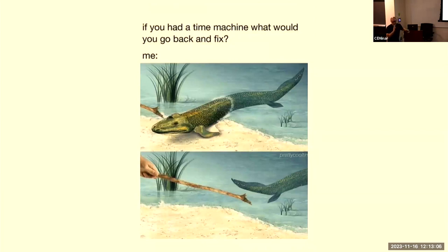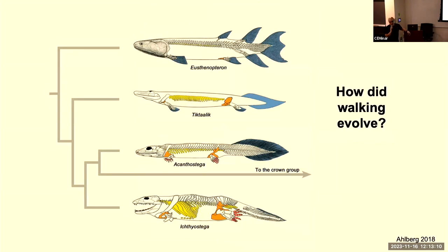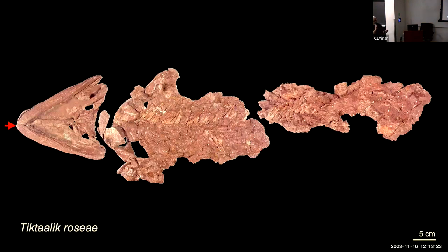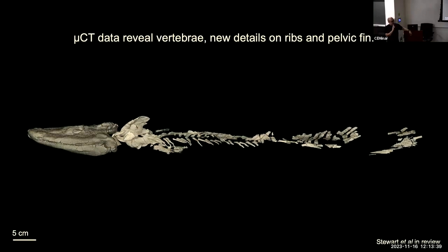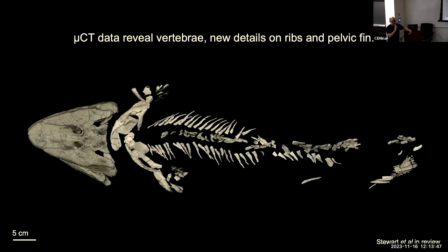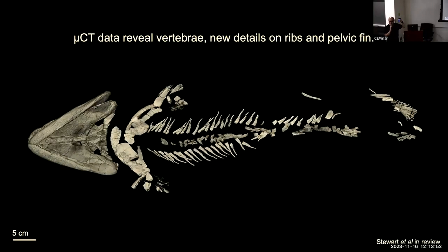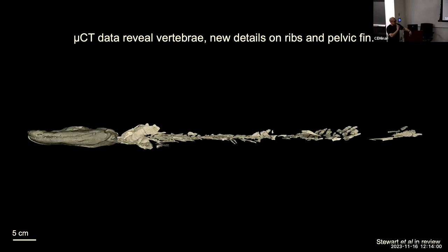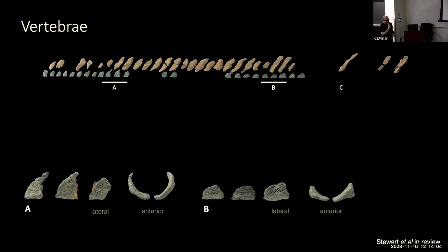Now I'll talk about a new dataset on the post-cranial skeleton of Tiktaalik, currently written up and submitted. A lot of work has been done describing the head, pectoral fin, and shoulder girdle, but now we've CT-scanned the original materials and can see for the first time new details including the vertebrae. This is the first full description of Tiktaalik's vertebral column. The new data also reveal new traits in the ribs — the original drawings were based on maybe six or eight anterior ribs, but now we have a series of 54 in the specimen.